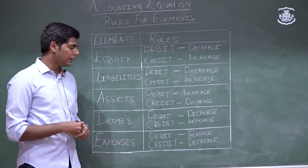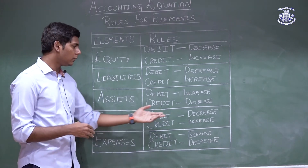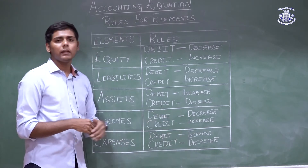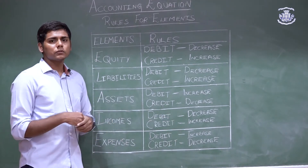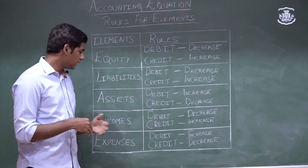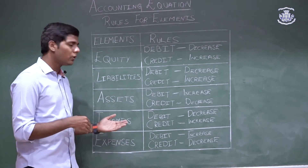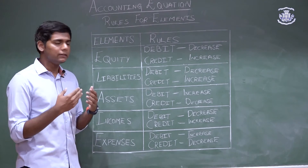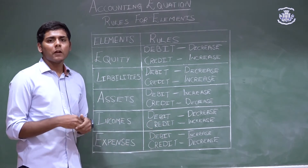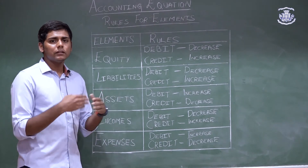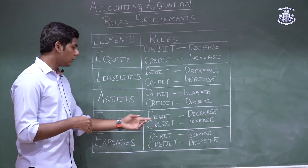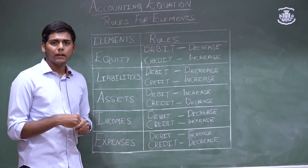For incomes, the rule is debit when it decreases and credit when it increases. The most common example is sales: whenever we make a sale, the value of income increases, so sales is recorded as a credit entry. But when it comes to sales returns, the value of income is decreasing, so we record it as a debit entry.